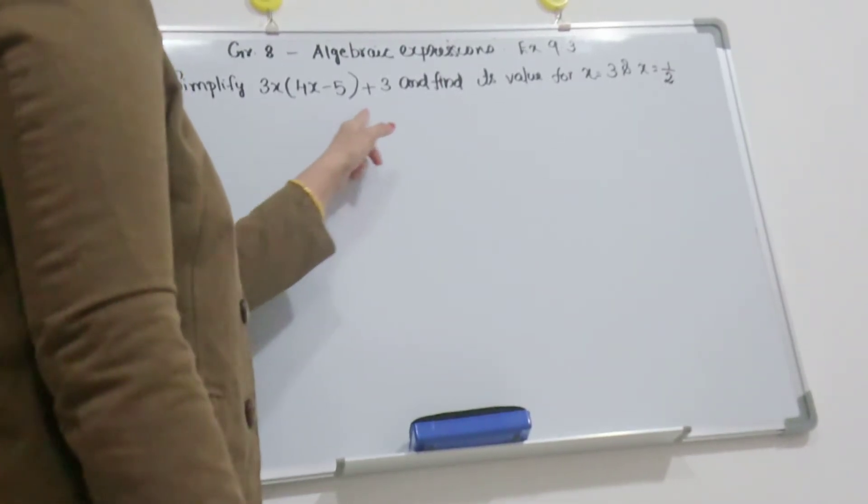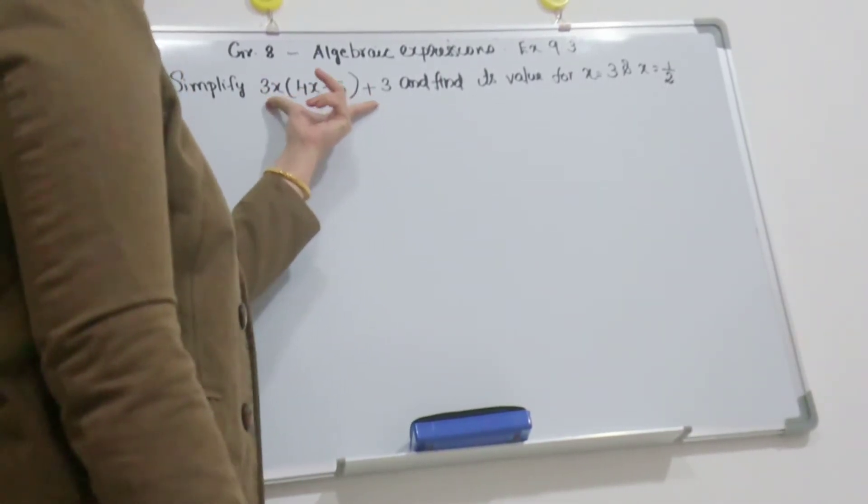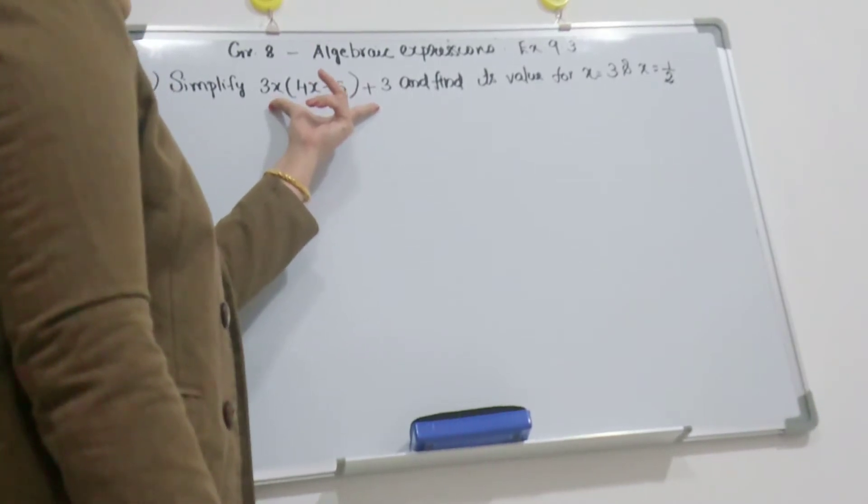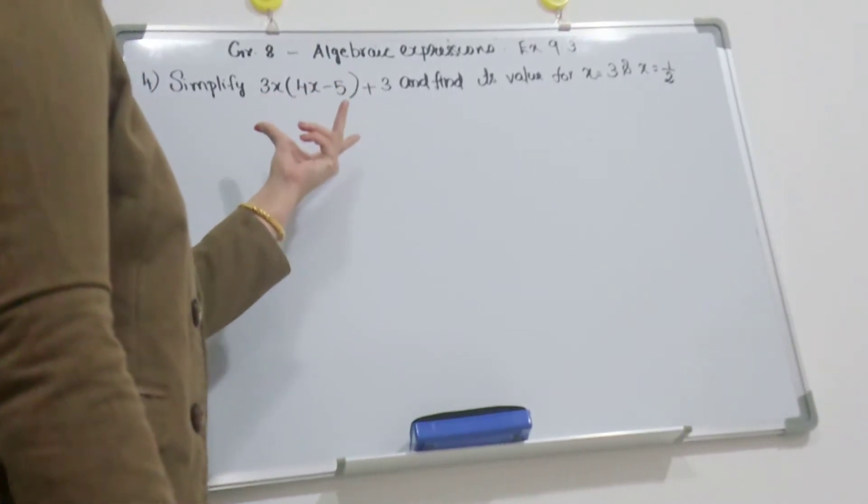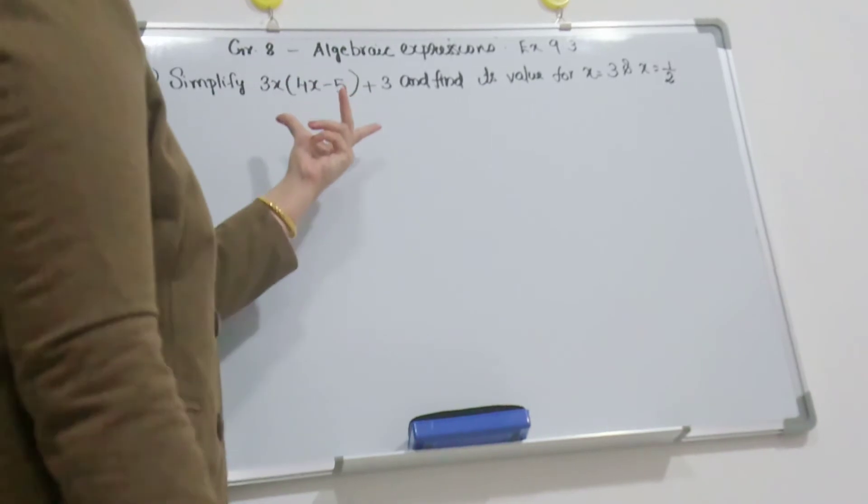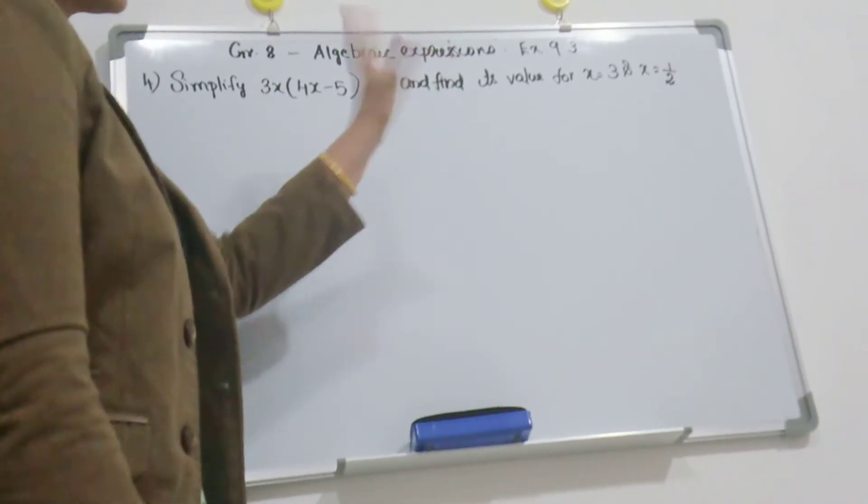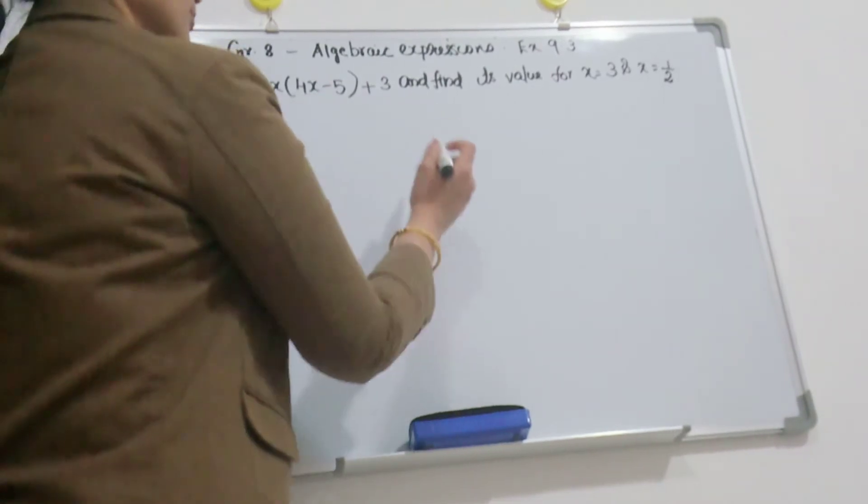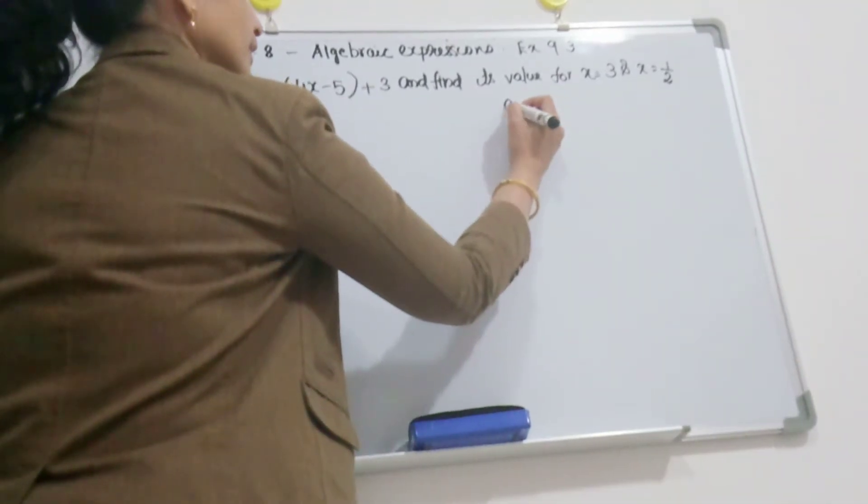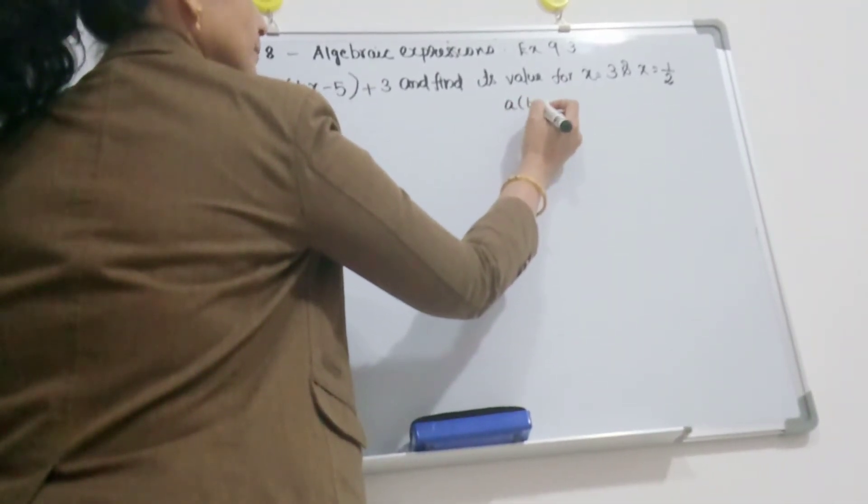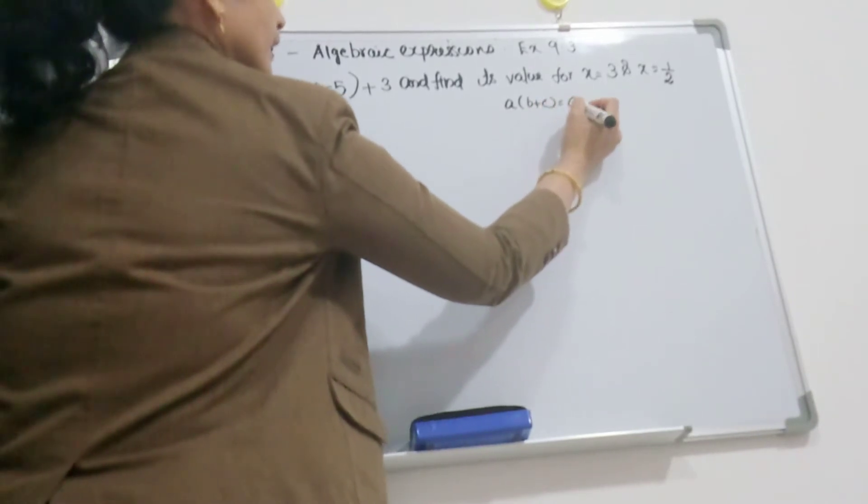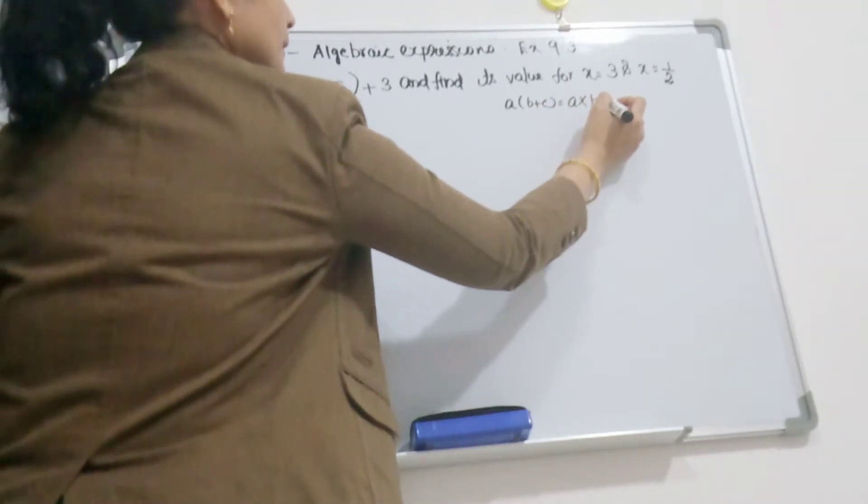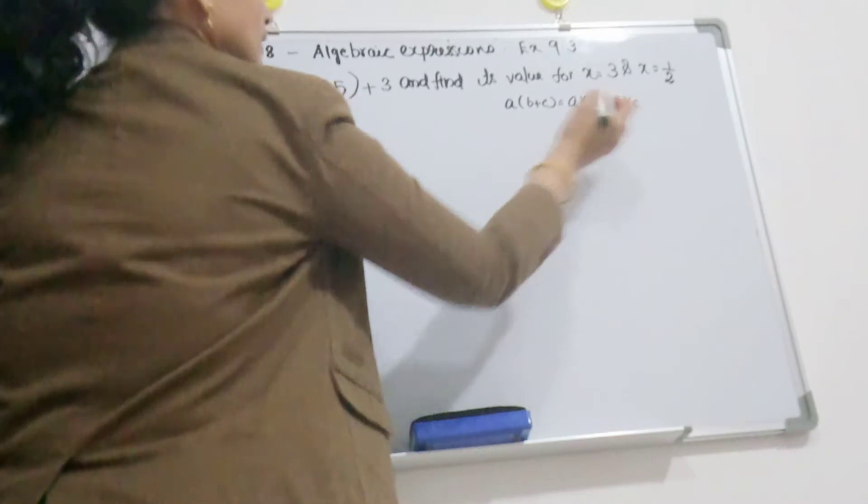First you simplify the expression. Simplify means make it smaller. First you simplify and then you substitute the value. You know the distributive property: A into B plus C equal to A into B plus A into C.